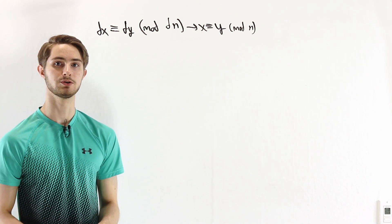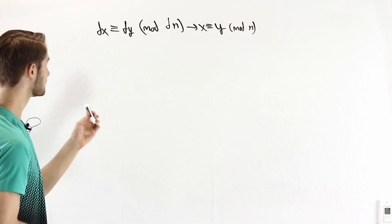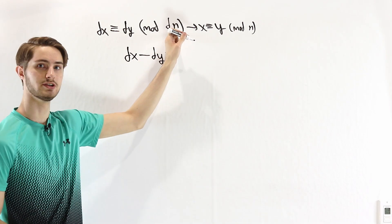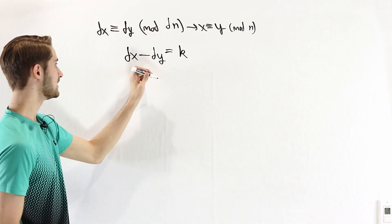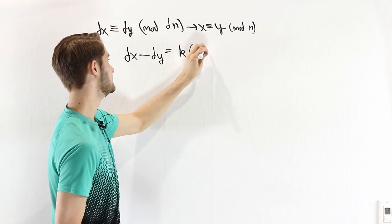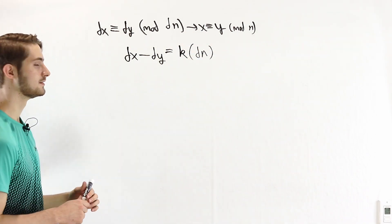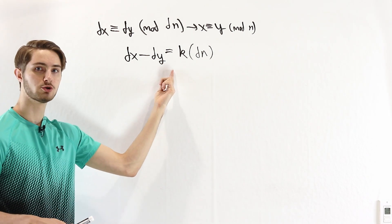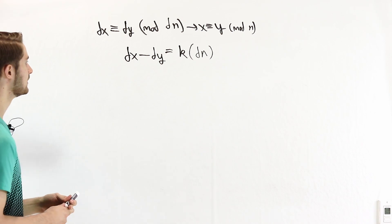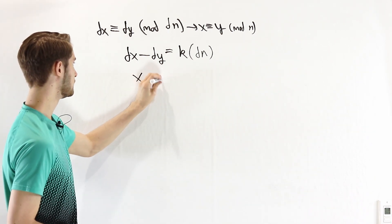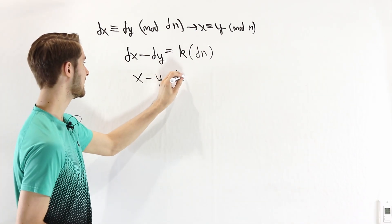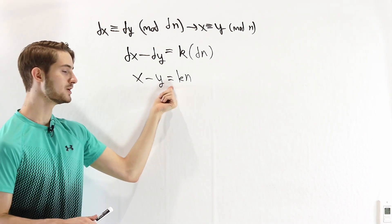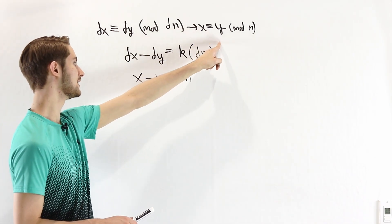This proof is simple — we just use the definition of modular arithmetic. If dx ≡ dy mod dn, then dx − dy must be a multiple of dn, so dx − dy = k·dn. Since d ≠ 0, we can divide everything by d to get x − y = k·n. This is exactly the definition of x ≡ y mod n.